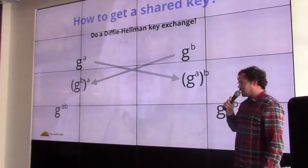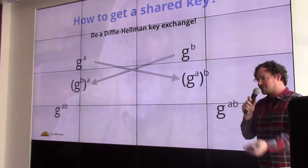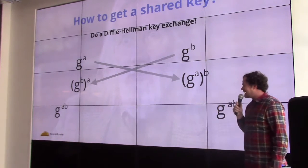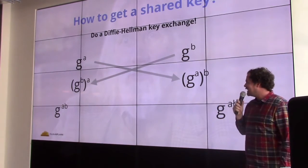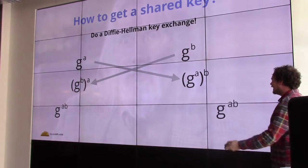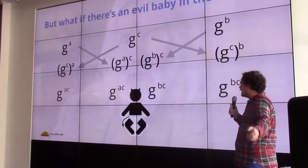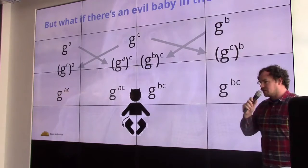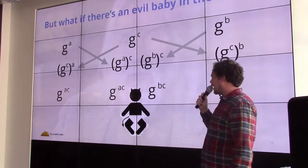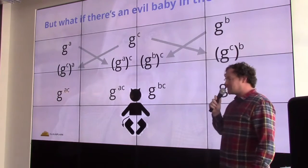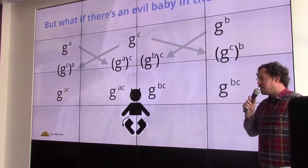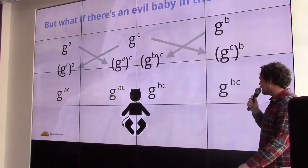It was a lot cooler when I first learned about it. So if this is your first time seeing Diffie-Hellman — magic, right? Something that you learn after learning Diffie-Hellman is: what if there's some sort of evil baby in between, or some sort of malicious adversary?